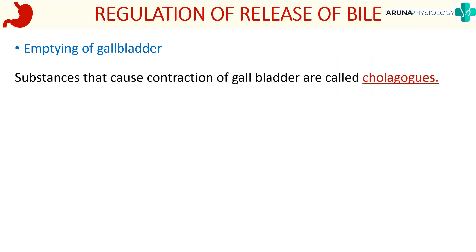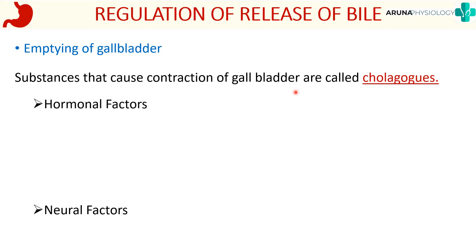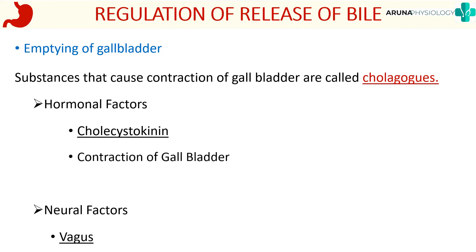Substances that cause contraction of the gallbladder are called chologogs — distinct from choleretics, which enhance bile salt production. Contraction of the gallbladder is regulated by two factors: hormonal and neural. The main hormone involved is cholecystokinin (CCK), and the neural factor is the vagus nerve. Cholecystokinin not only produces contraction of the gallbladder but also produces relaxation of the sphincter of Oddi.